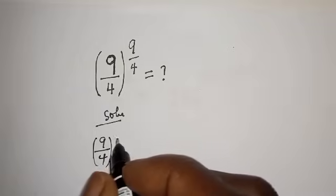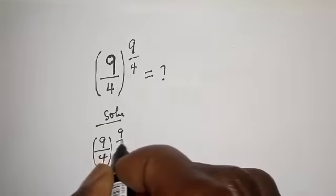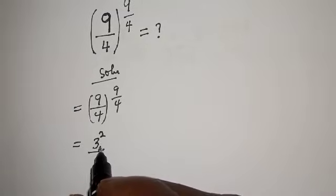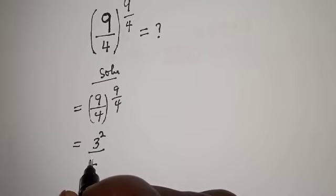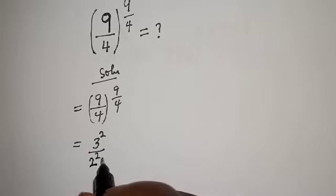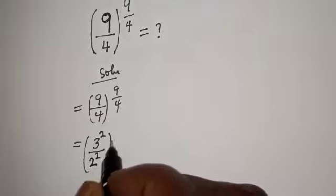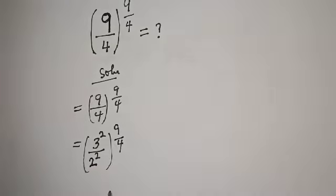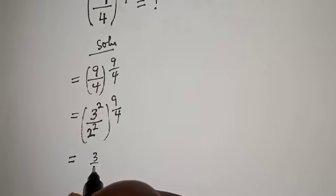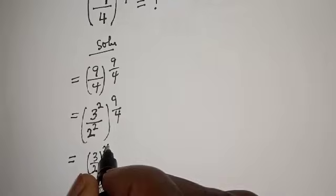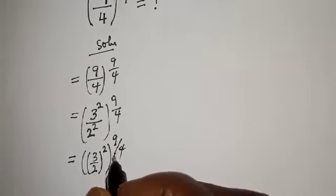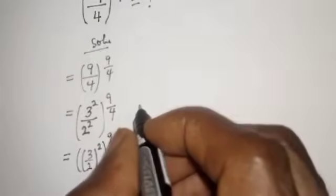9 divided by 4, to the power of 9 over 4. 9 can be written as 3 squared, and 4 can be written as 2 squared. So we have (3²/2²)^(9/4). Because of the same power, this becomes (3/2)² all raised to the power of 9 over 4.